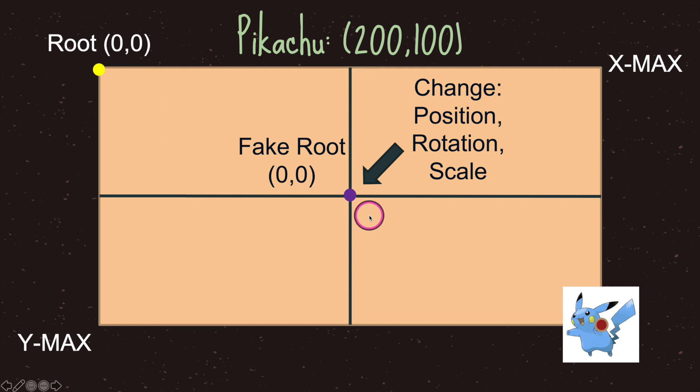And so everything underneath it thinks that this is the root node. However we know better and we know that it's a fake node or in this case a fake root node and from the fake root node we can change its position, rotation and scale without affecting the real root node.